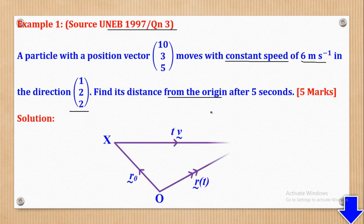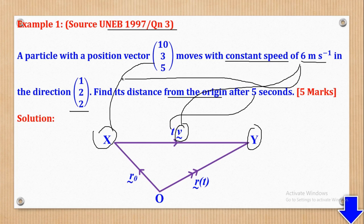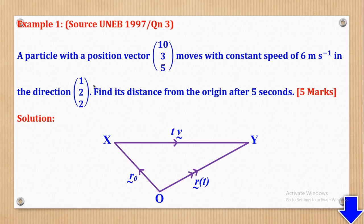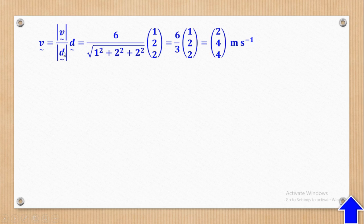The first thing to do is make a sketch from O to X, then from X to Y. X is the initial position and Y is the position after T equals 5 seconds. We don't know the velocity in vector form — we are given the magnitude, which is 6, and the direction vector (1, 2, 2). So the first thing to do is convert magnitude to vector form using the formula: velocity vector equals magnitude of velocity over magnitude of direction vector, multiplied by the direction vector.